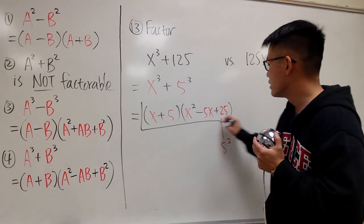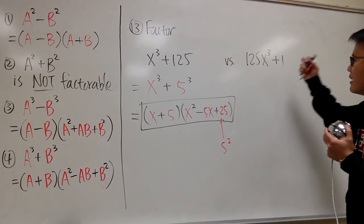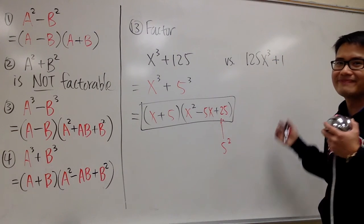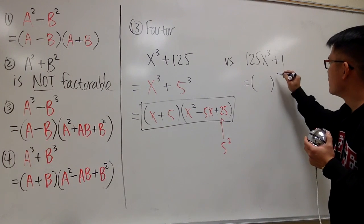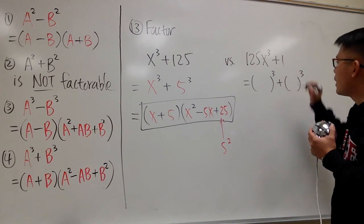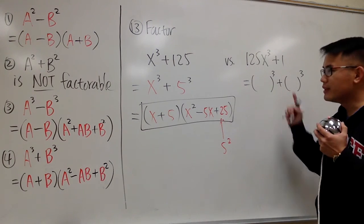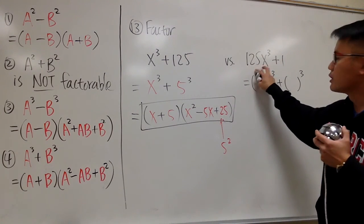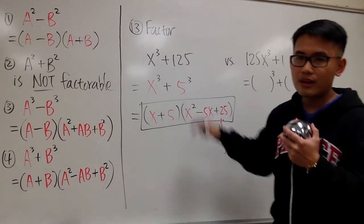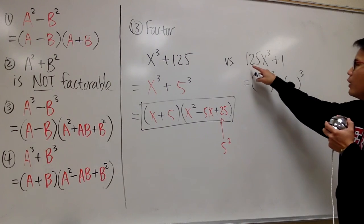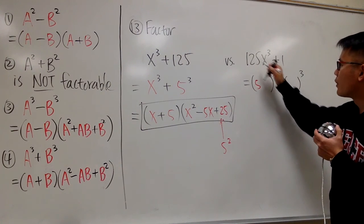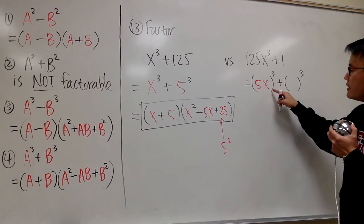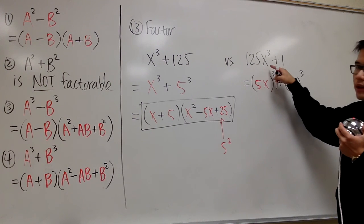Now we'll look at the second example: 125x to the third power plus 1. The 125 is in front of x to the third power instead. We need something to the third power plus something to the third power. We must use parentheses because we have 125 in front. 5 to the third power gives us 125, and inside we also put the x, so 5x in the parenthesis to the third power gives us 125x to the third power.